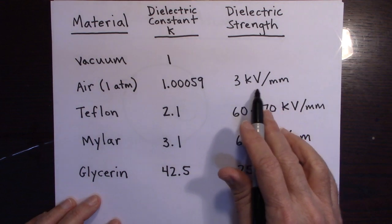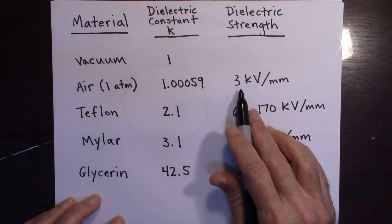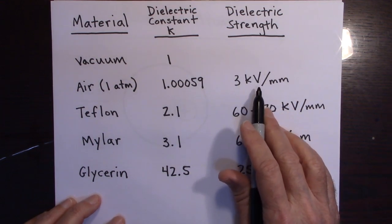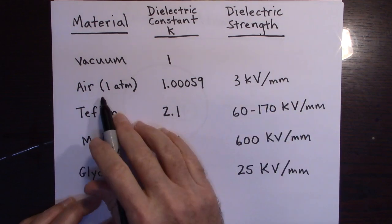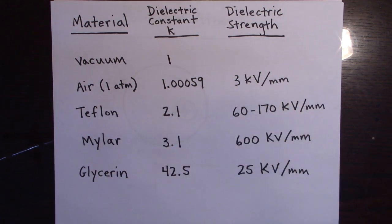But we say that air has a dielectric strength of three kilovolts per millimeter. And if you put a stronger electric field than that for air, it will start to conduct electricity. And it will actually break down and you'll get the capacitor that has the air in between will actually start to break down.